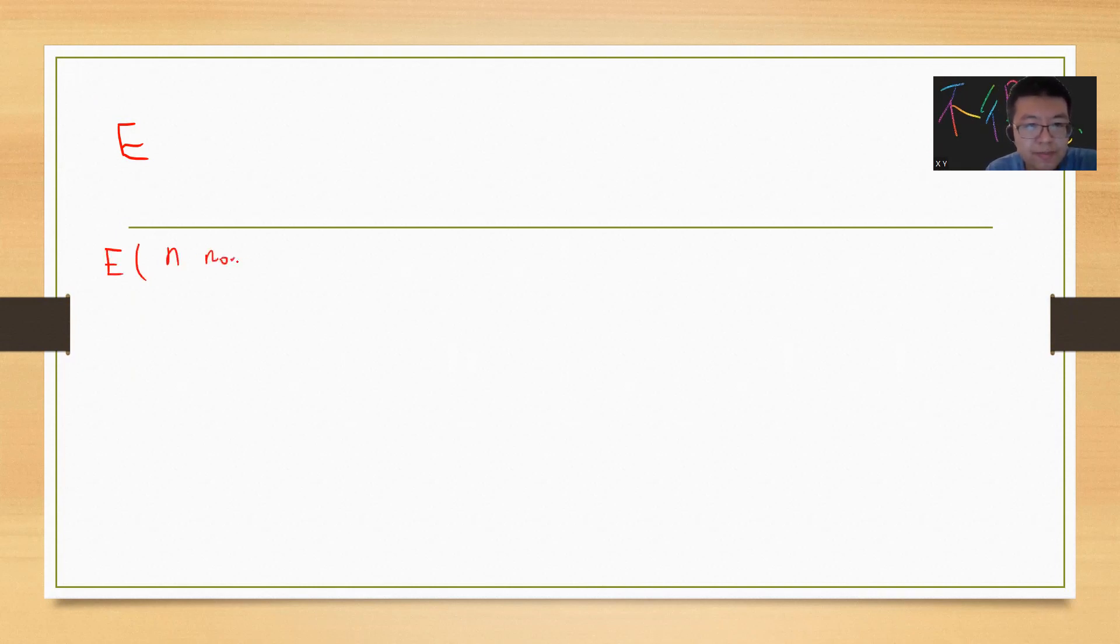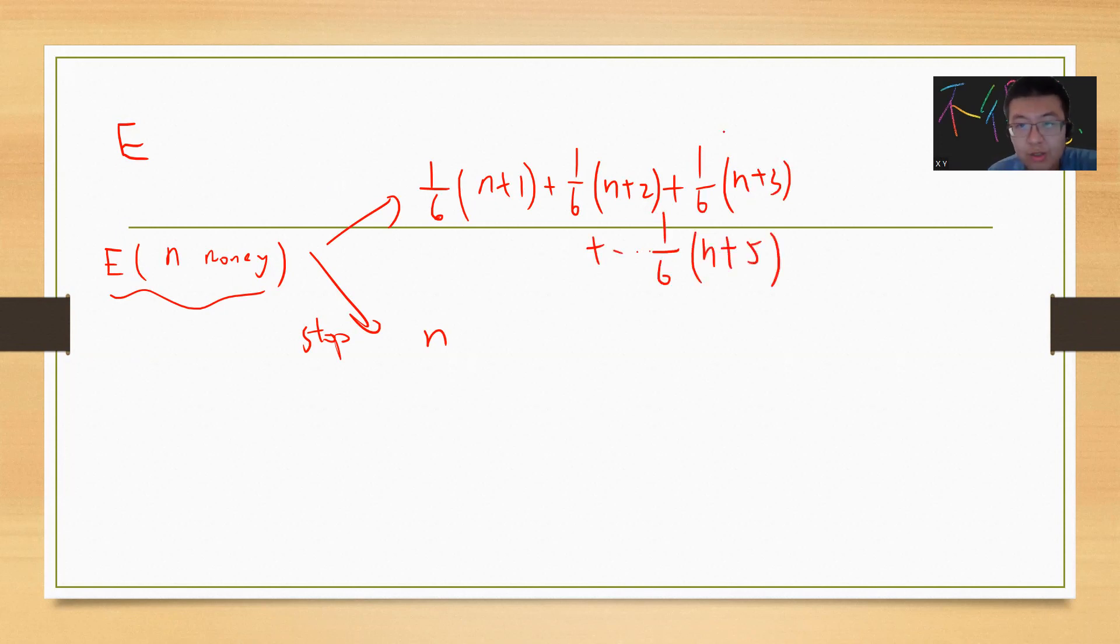Let's do a simple calculation. Suppose you already have money n, then what's the expectation value of the final money you can get? If you have money n, you have two choices: one is you just stop, and if you stop you remain with n. If you keep going, then you get 1/6(n+1) + 1/6(n+2) + 1/6(n+3) + 1/6(n+4) + 1/6(n+5). You can calculate this.